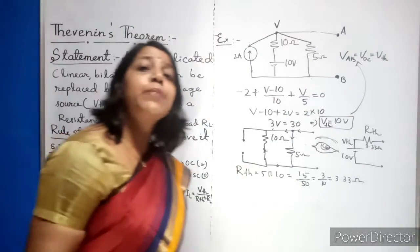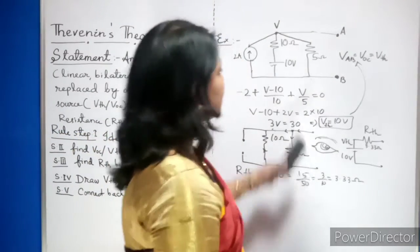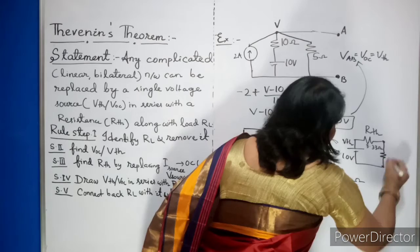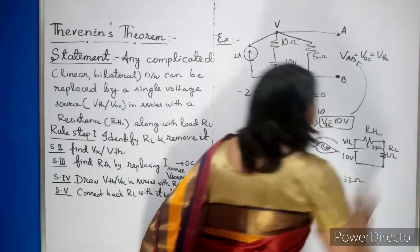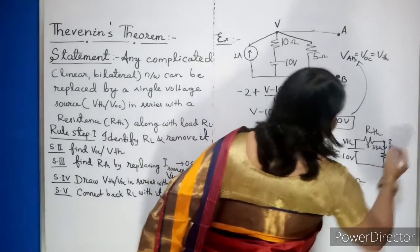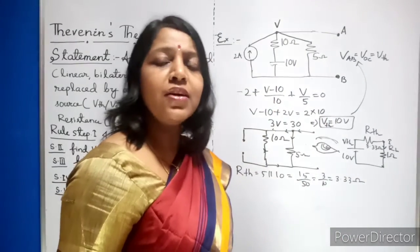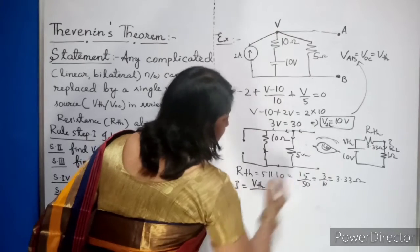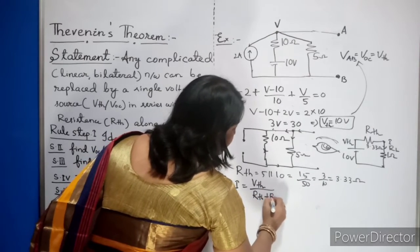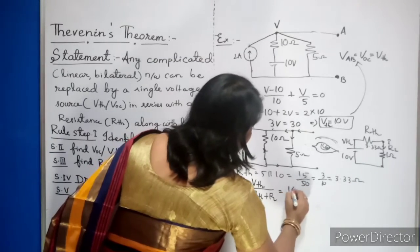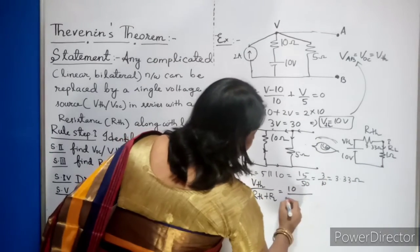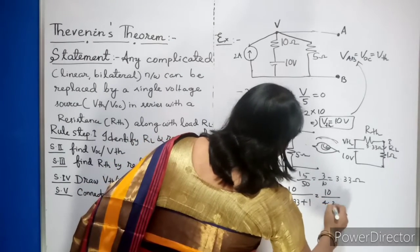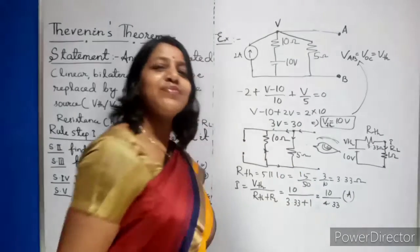Step 5: Connect back your load resistor RL. The load resistor removed in step 1 was 1 ohm, so connect it back. Now it is a simple series circuit. Apply Ohm's law: I = VTH / (RTH + RL) = 10 / (3.33 + 1) = 10 / 4.33 amps. That is your answer.